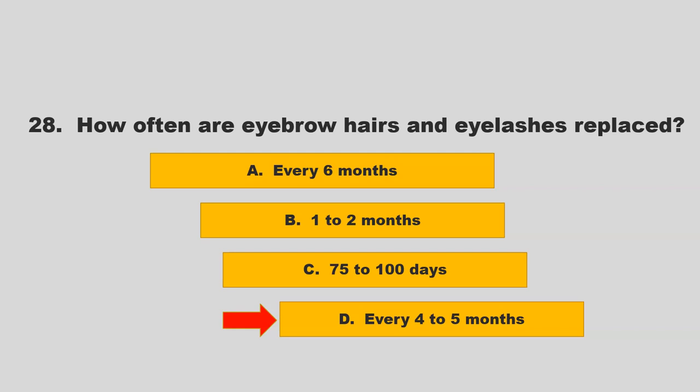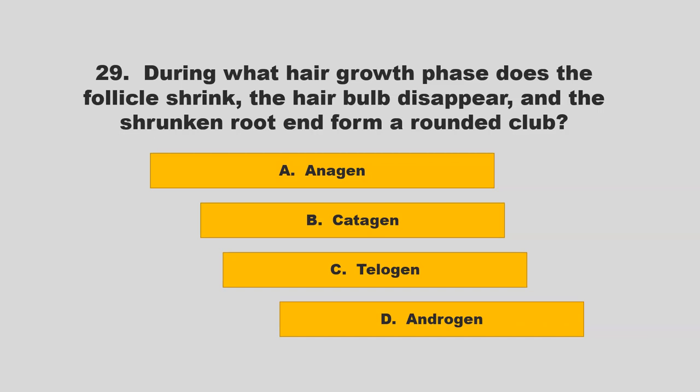During what hair growth phase does the follicle shrink, the hair bulb disappear, and the shrunken root end form a rounded club? Is it anagen, catagen, telogen, or androgen? If you chose B, catagen, you are correct.